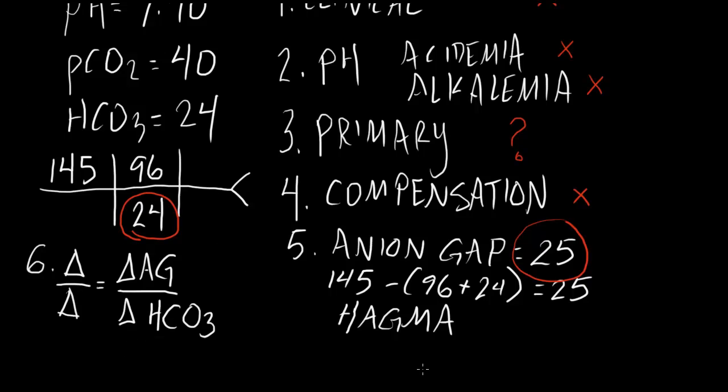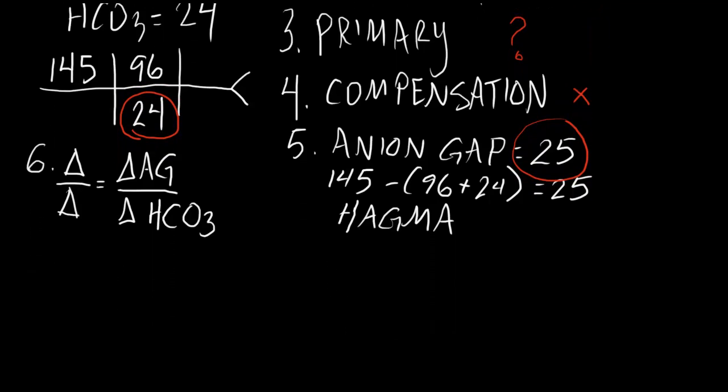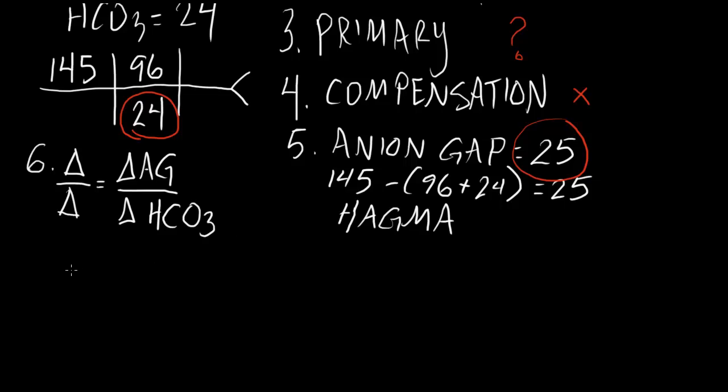So in terms of the delta-delta, the way to figure it out is we want the change in anion gap. So that's the anion gap that we have, 25, less 10, which is considered normal, over the change in bicarb. So the change in bicarb is 24, which is normal, less the bicarb that we have, which in this case is 24.